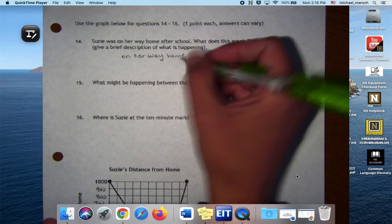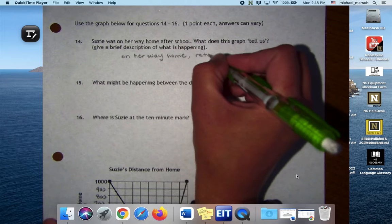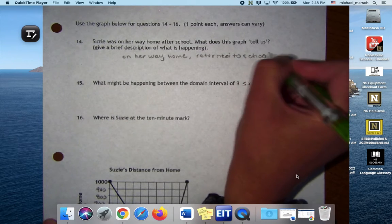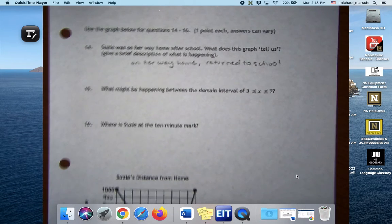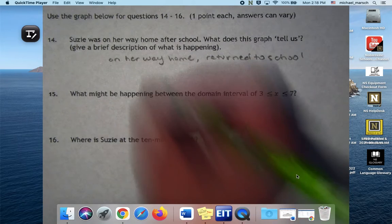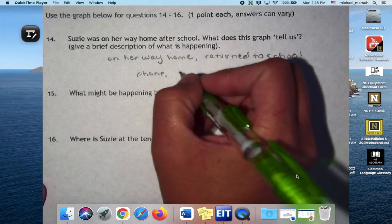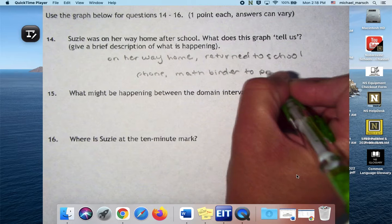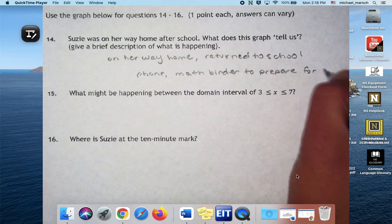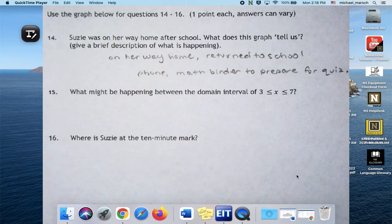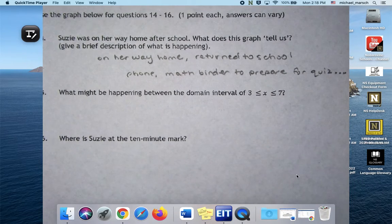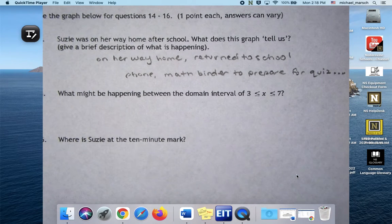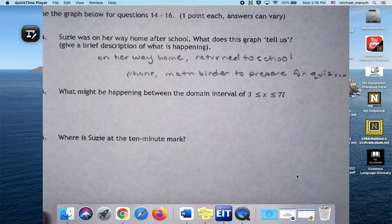We don't have to label all the distracted parts but we can say return to school. And we talked on Friday about some things you could possibly need to return for. Math binder to prepare for quiz. Yeah, you guys would totally come back right? Just as long as you know she doesn't make it home, she's back at school. I was really confused, I thought that it was the next day but then I looked at the minutes and I was like oh it's not. So what might be happening between 3 and 7 minutes?